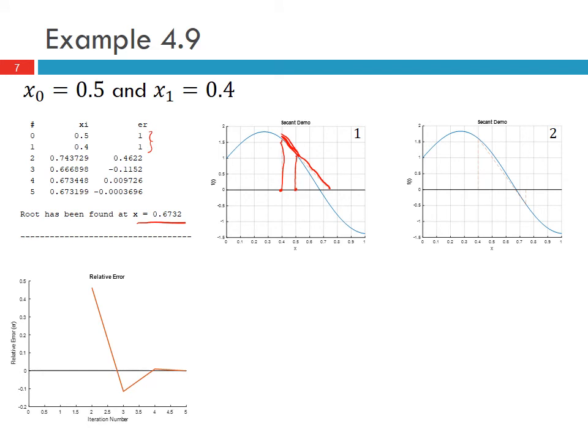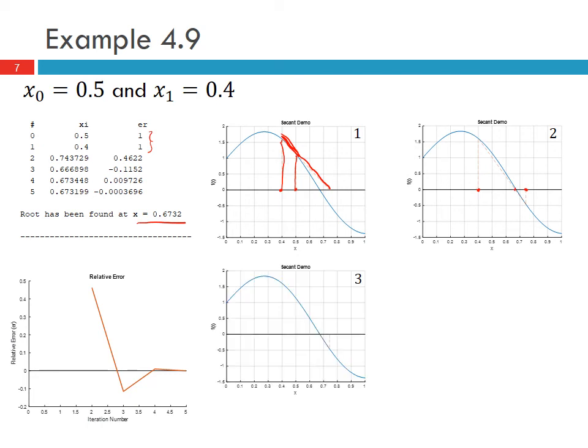In the next iteration, now my estimates are 0.4 and this one out here which was 0.74. We draw the line between them and where that line intersects the x-axis gives us my next estimate of the root, which in this case was 0.6668.